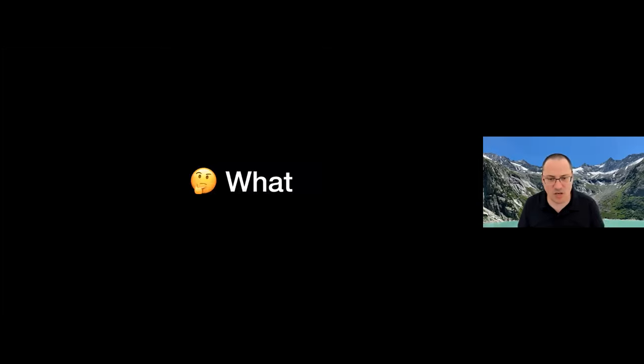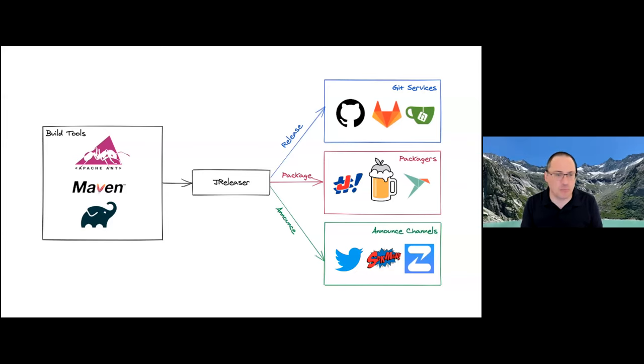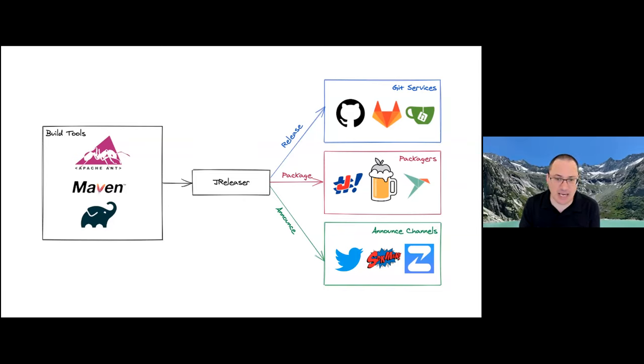What is exactly JReleaser? It's a command line tool that allows you to create releases. You can create a Git release on your typical Git services — GitHub, GitLab, Gitea, and a few others. You can also package binaries into different formats or platform-specific packagers. Finally, you can announce releases to different communication channels. You supply binaries built in the way you currently do — using Ant, Maven, Gradle, or something else — along with a metadata model to JReleaser.